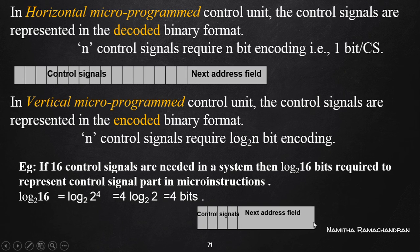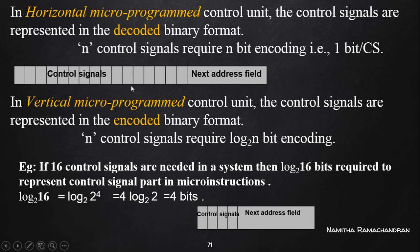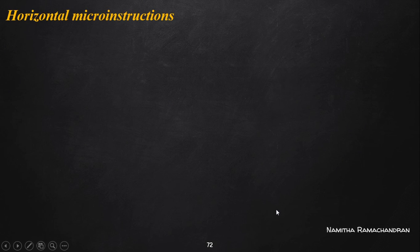The next address field is fixed in size for both horizontal and vertical micro instructions, and its size depends on the size of the control memory. We cannot modify this next address field size. We can only reduce the size of the control signal field in the case of vertical micro instructions, by using encoding to represent n different control signals using only log₂(n) bits.